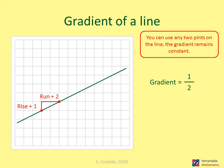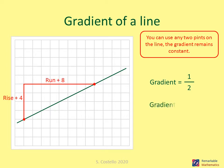With another two points, this time we have a rise of four and a run of eight, which gives us a gradient of four over eight. This simplifies down to one over two.